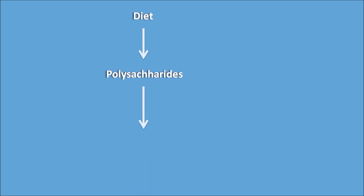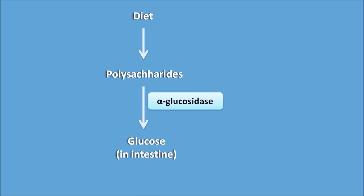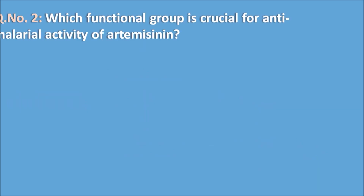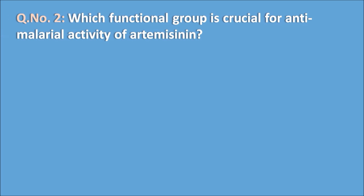When we take a meal, dietary polysaccharides are converted to glucose within the intestine by the enzyme alpha-glucosidase. This glucose is then absorbed through the intestinal barrier into systemic circulation. Acarbose inhibits the alpha-glucosidase enzyme, thereby inhibiting the absorption of glucose derived from hydrolysis of polysaccharides.